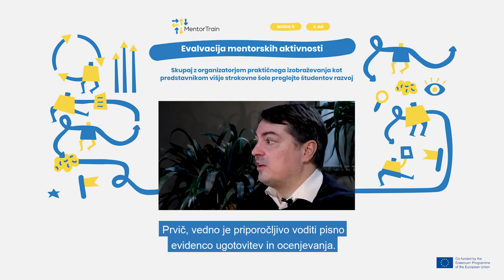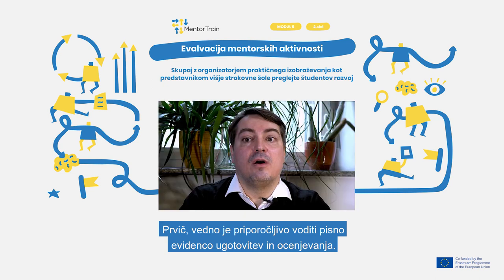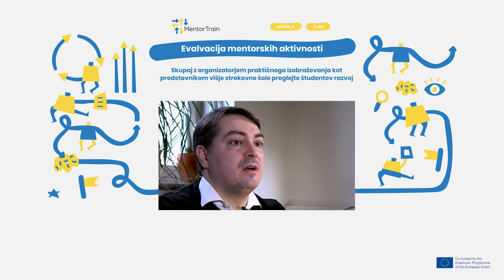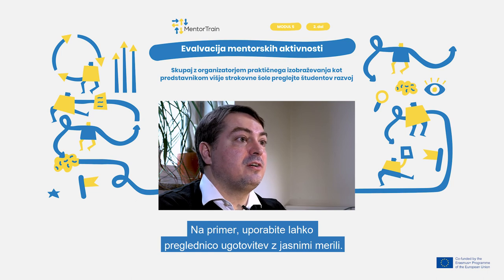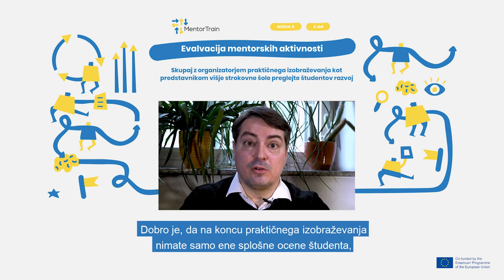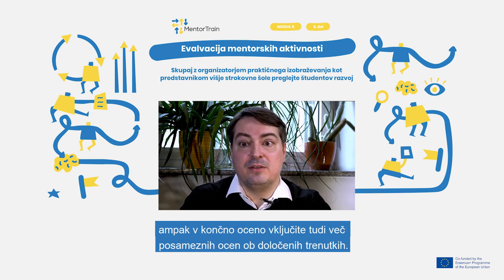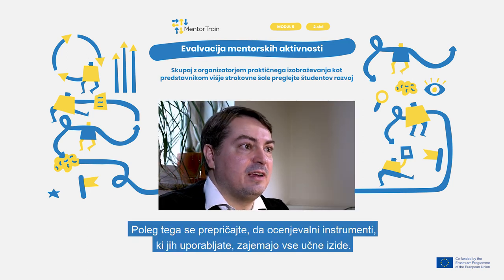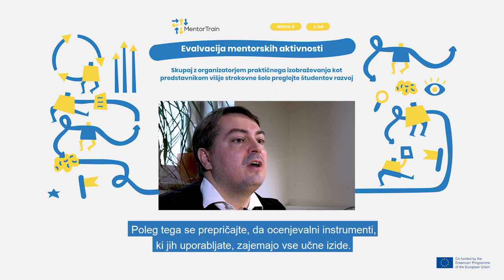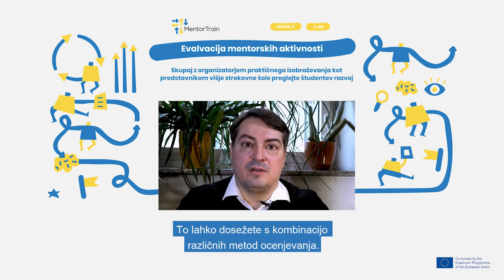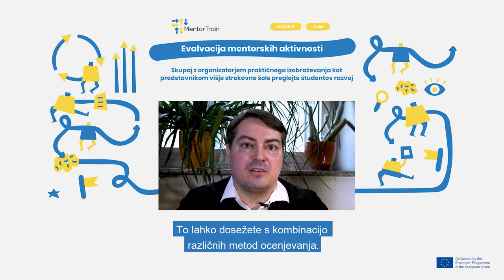Firstly, it is always advisable to keep a written record of your observations and assessments, for example by using an observation grid with clear criteria. It would also be useful to not have just one overall assessment of the apprentice at the end of the apprenticeship, but instead to build in a number of evaluation moments. Also, make sure that the evaluation instruments you use cover all the learning outcomes. For this, it can actually help to use a combination of different evaluation methods.